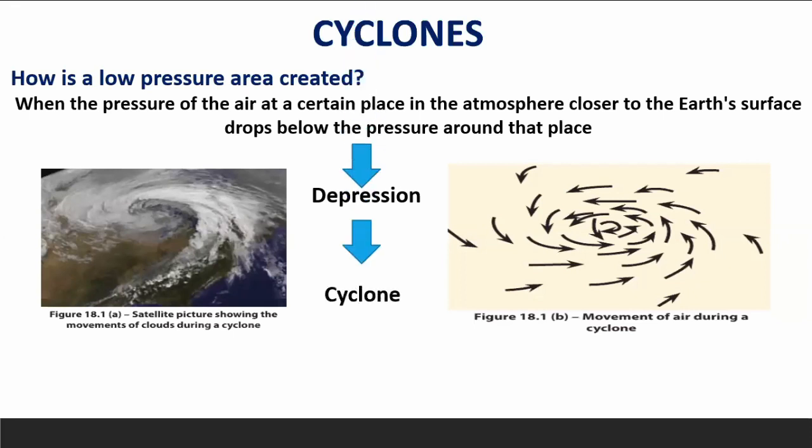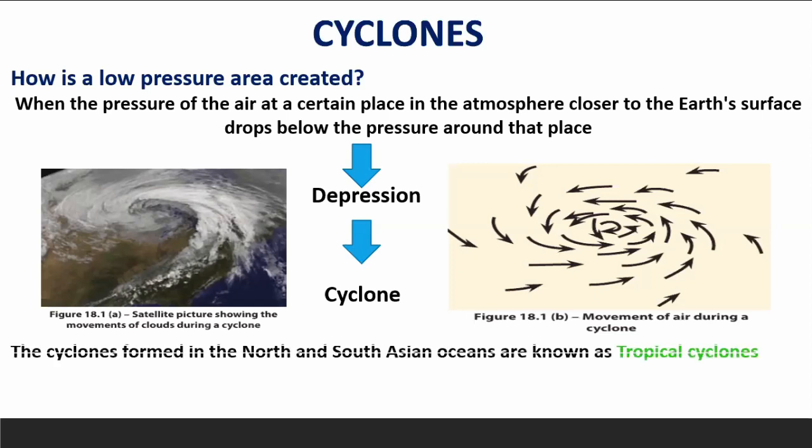As you can see in figure 18.1, this is the movement of air during a cyclone. You can see that the air particles will be moving in a circular direction forming a whirl. Figure 18.1 also shows the satellite picture showing the movements of clouds during a cyclone.